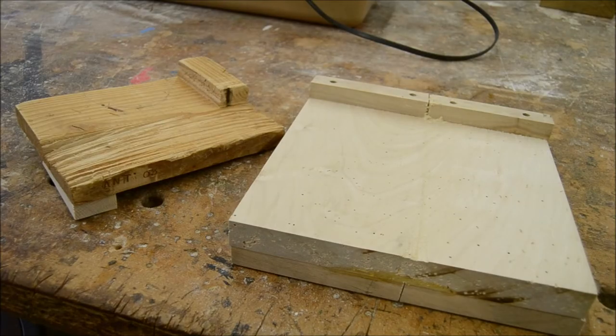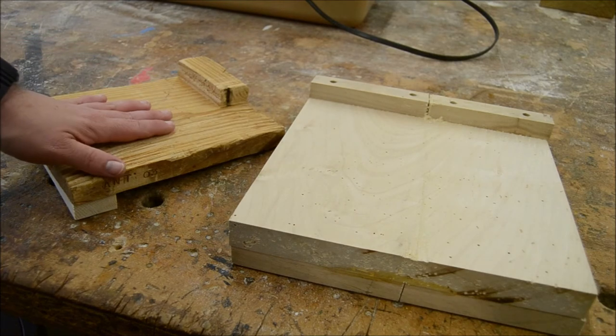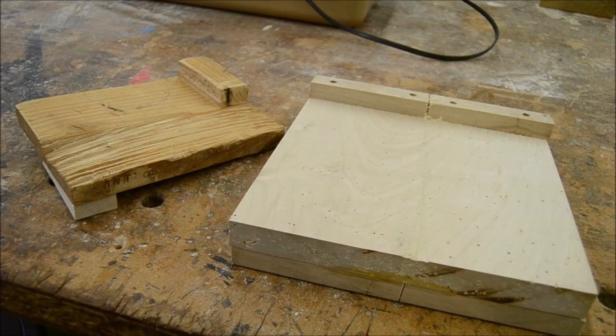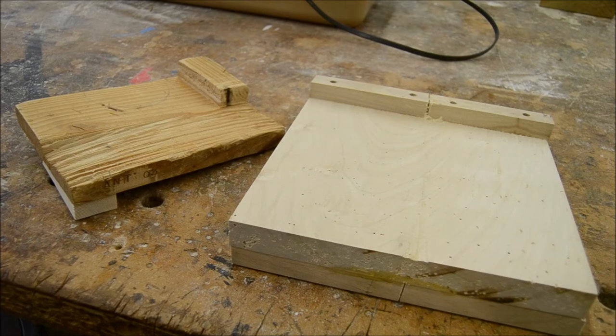Next up we've got a bench hook. A bench hook is a board that we can use to help us hold a piece of wood still while we cut and it also protects our table.